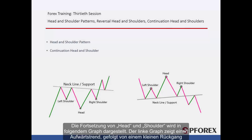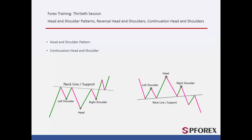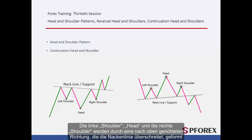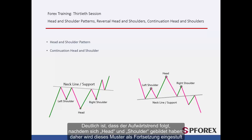The continual head and shoulder is shown on the following graphs. The left graph illustrates an uptrend followed by a small decline. Left shoulder, head and right shoulder are formed with an upward direction that crosses the neckline. As it is clear, the uptrend is followed after head and shoulder is formed. Thus, this pattern is classified as continual.